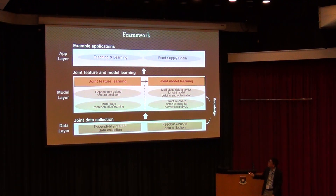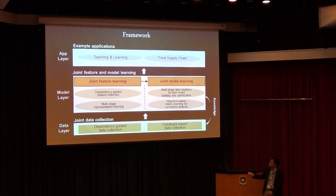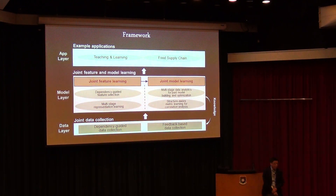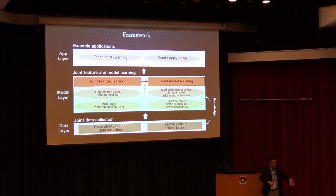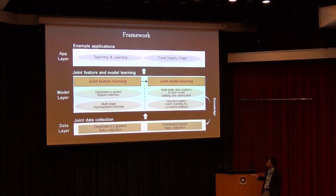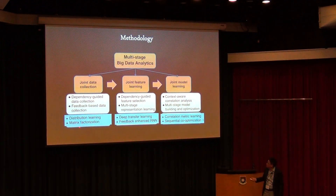We study two applications: teaching and learning analytics, and food supply chain. Teaching and learning use a parallel configuration — teaching and learning subsystems work simultaneously and interact. For food supply chain and food safety, it consists of sequential partners: farmer, manufacturer, transportation, warehousing, and customers — a sequential configuration. We study how to perform joint analytics across these sequential stages.